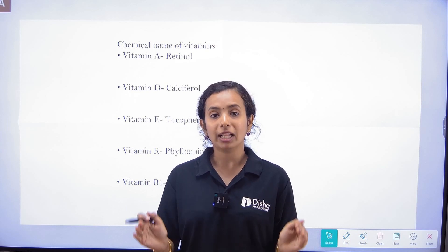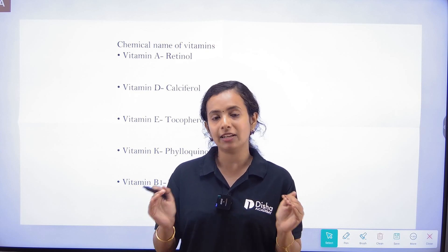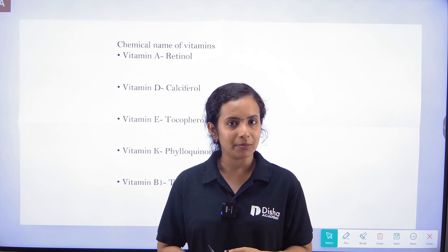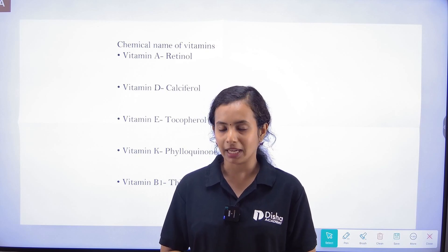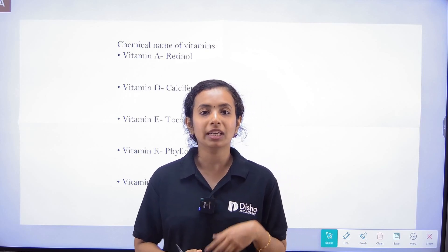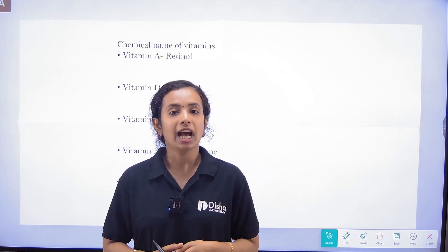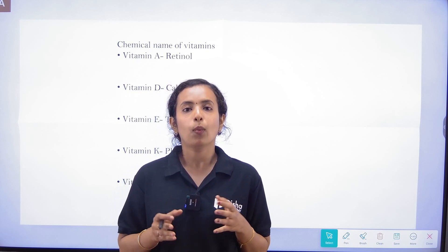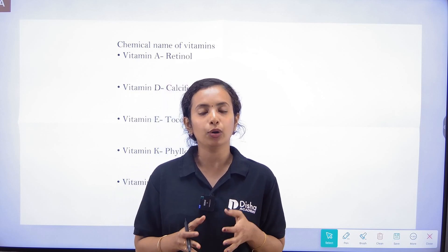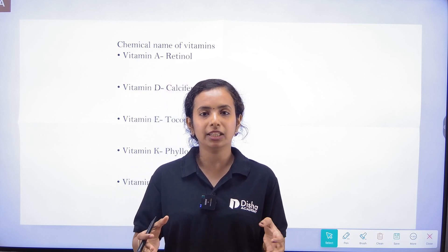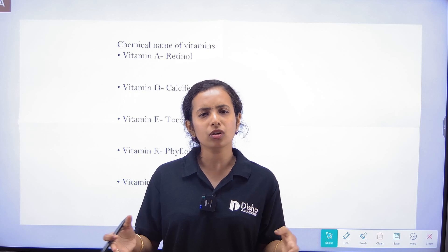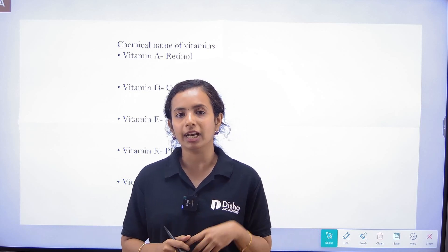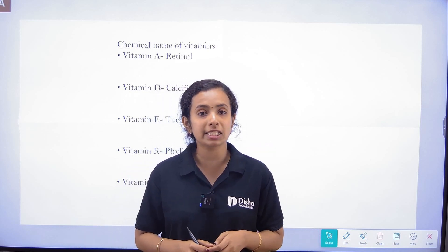There are 13 essential vitamins. We have Vitamin A and Vitamin B. Vitamin B is complex, and we will learn about its subgroups.